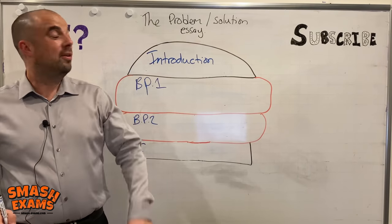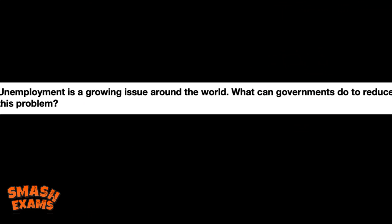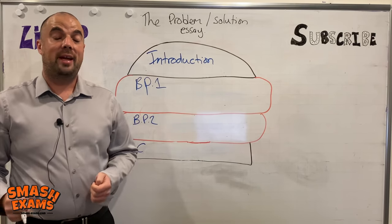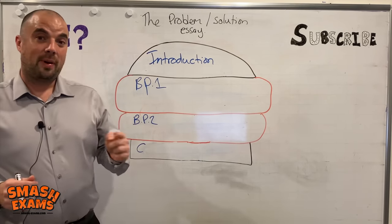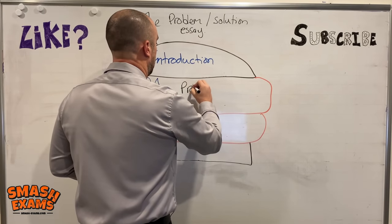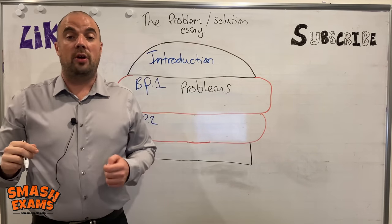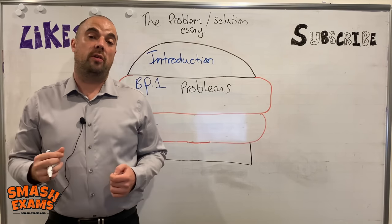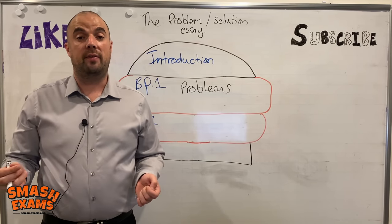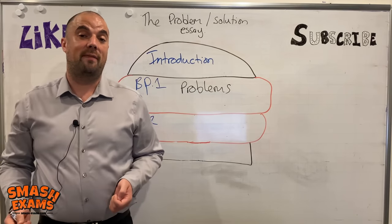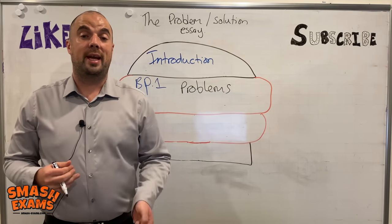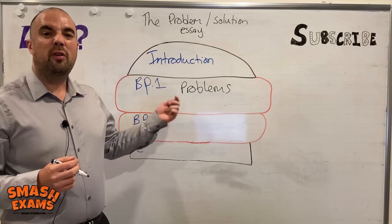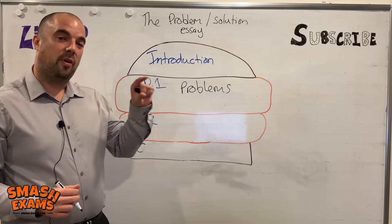The next type of essay is the problem solution essay. For example: 'Unemployment is a growing issue around the world. What can governments do to reduce this problem?' In your introduction you give a quick outline of what you're going to be talking about and paraphrase the question. In body paragraph one you write about the problems — so what are the problems of unemployment? Things like people not having enough money for shelter or to feed their family, or turning to crime if they have nothing to do. Try to have one or two problems in this first body paragraph.